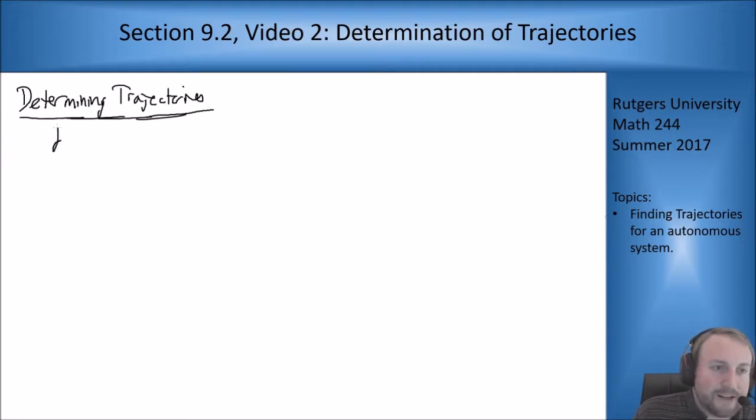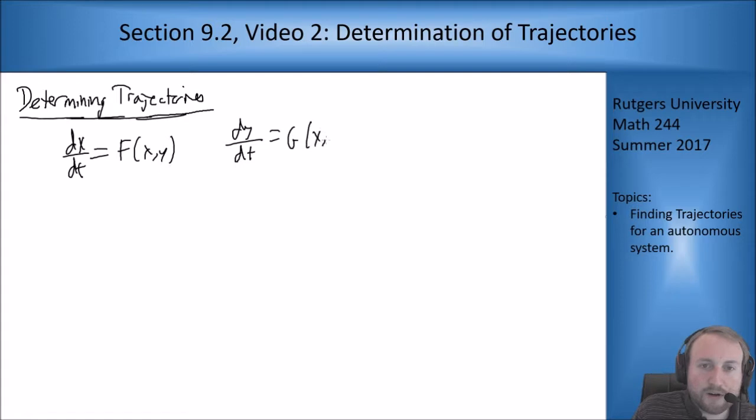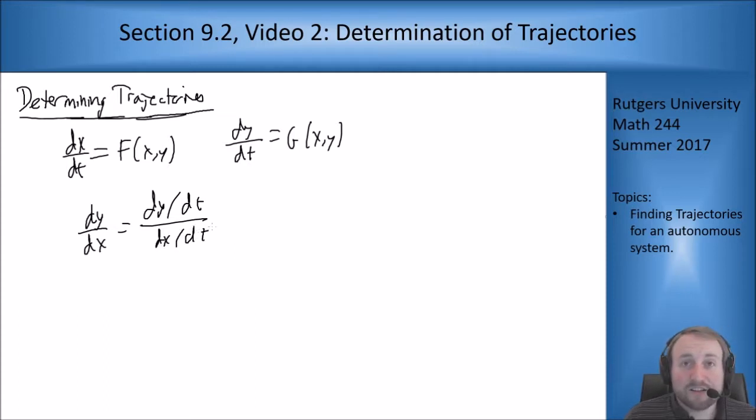We're looking at something where we have dx/dt is some function f of x and y, and dy/dt is some function g of x and y. Now if we look by the chain rule properties, we know that dy/dx is going to be dy/dt divided by dx/dt. You can think of this by canceling the dt's, or if you actually work through chain rule, you'll see this is what you end up getting.